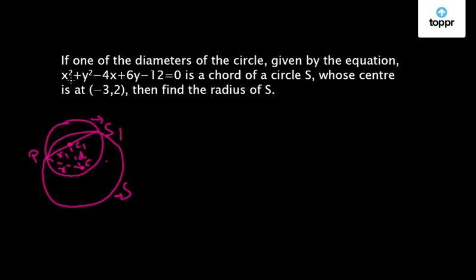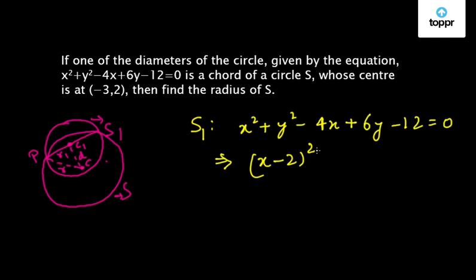Now first of all let us find out what is the center C1 of the circle S1. Now S1 is given by x² + y² - 4x + 6y - 12 = 0. If we simplify this we will get (x - 2)² + (y + 3)² = 25.